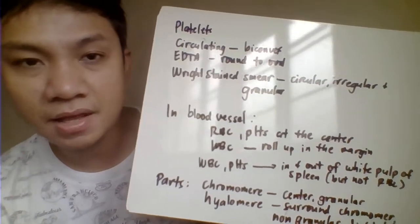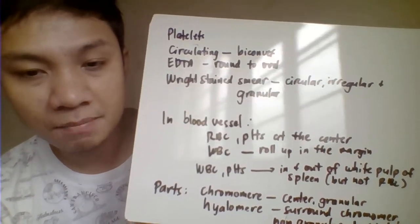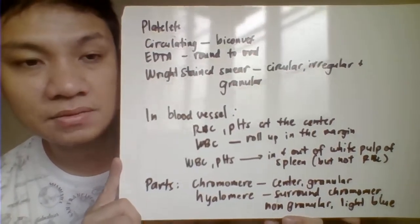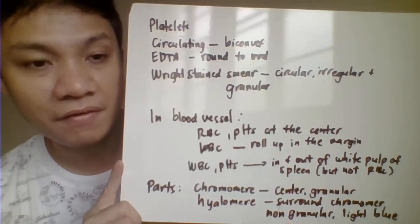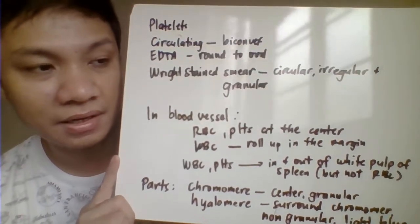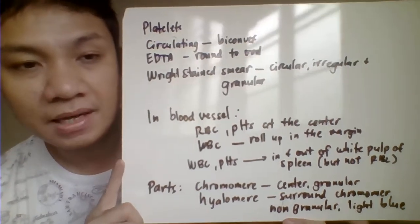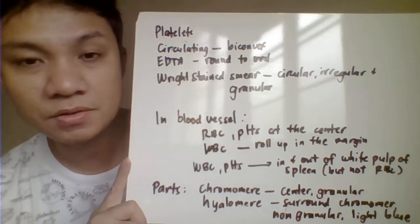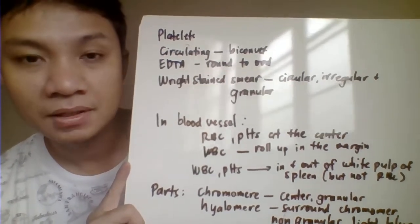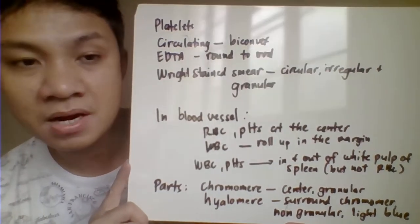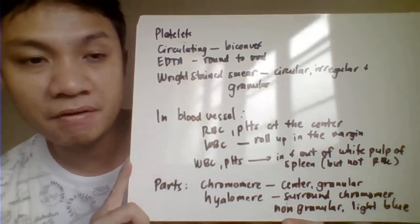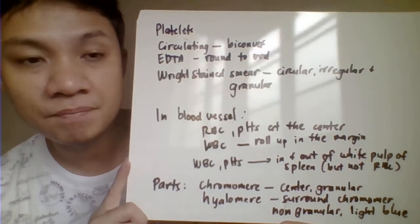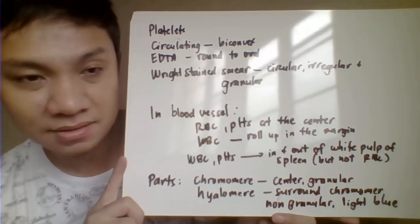Circulating platelets in the peripheral circulation assume a biconvex shape. But if you collect blood and put it in an EDTA tube, it would appear round, circular, or oval. If you make a smear and stain your peripheral blood smear with a Wright stain, your platelets appear circular, irregular, and most likely granular.